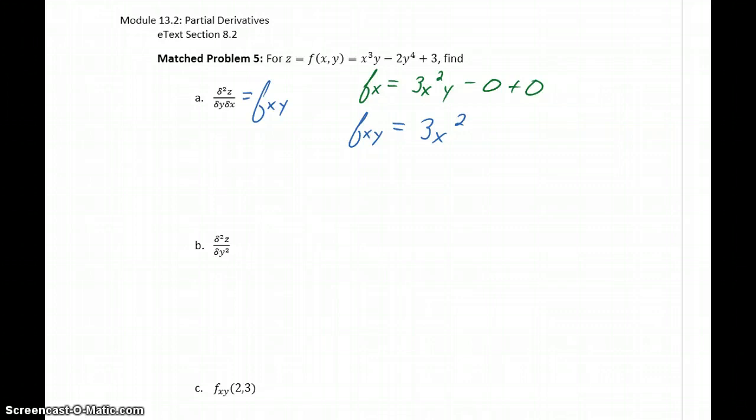In part b, we're taking the second derivative of z with respect to y, and that squared basically just means both times, take the derivative with respect to y. So this would be the same thing as f sub y, y.